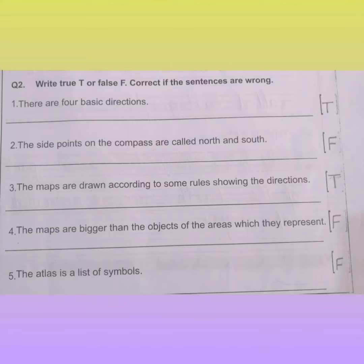Number 4: the maps are bigger than the objects of the areas which they represent — False. And number 5: the atlas is a list of symbols — False.